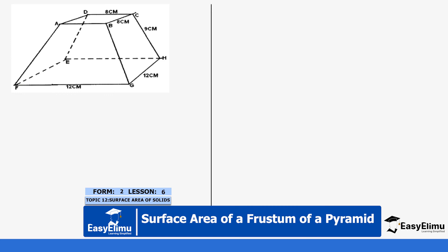We have a square-based pyramid that has been cut to form a square-based frustum. You can see we have the top base which is a square, the bottom part which is also a square, and then we have some trapeziums. We are going to calculate the area of each and every surface and then add them together.